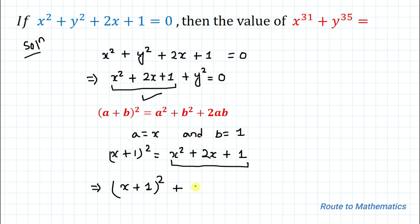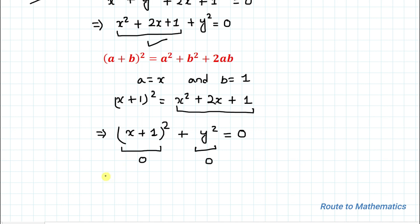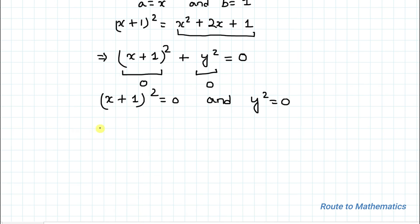Now, (x + 1)² + y² = 0. In order to satisfy this condition, both terms must individually equal zero, so that 0 + 0 = 0. So we set (x + 1)² = 0 and y² = 0, so that their sum equals zero and the equation is satisfied.